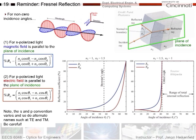For S-polarized light, the magnetic field is parallel to this plane of incidence, so the magnetic field would be oscillating this way, and the electric field would be perpendicular to the plane of incidence. Calculating Fresnel reflectance for S-polarized light is shown here plotted as the blue line versus angle of incidence. As you go to more and more glancing angles, eventually all the light could be reflected.